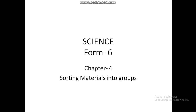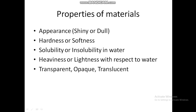Welcome students. In science class, chapter 4: Sorting Materials into Groups. Let's have a quick recap. Materials can be classified on the basis of certain properties such as appearance — it may be shiny or dull — hardness or softness, solubility or insolubility in water, heaviness or lightness with respect to water, and whether it is transparent, opaque, or translucent.